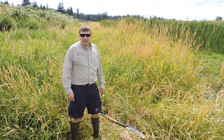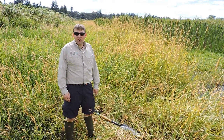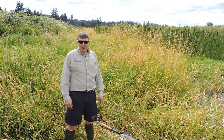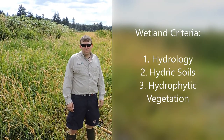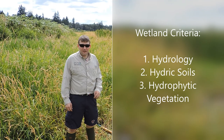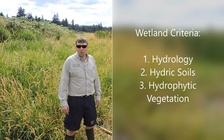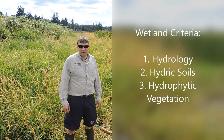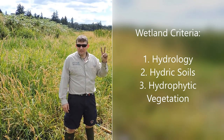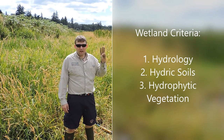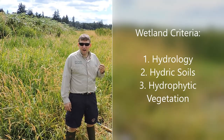Hello everyone. We are going to talk about the second of our criteria for wetlands. But first, let's review what criteria we need in order for an area to be a wetland according to the Army Corps of Engineers. First, we have hydrology; second, hydric soils; and third, hydrophytic vegetation. Today we're going to talk about hydric soils.